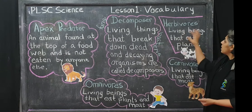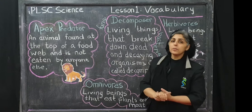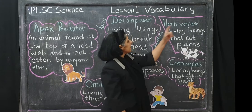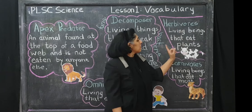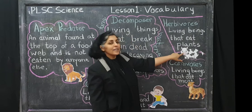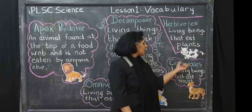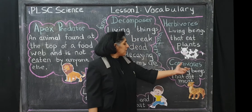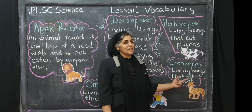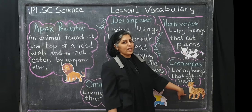Moving on to herbivores — herbivores are living beings that eat plants, like a cow. Carnivores are living beings that eat meat, like this little fella over here.